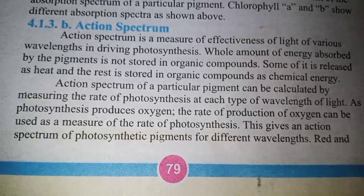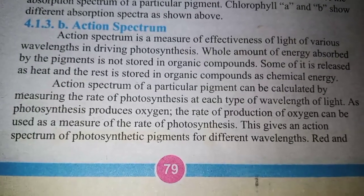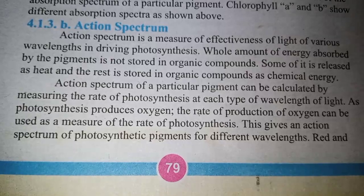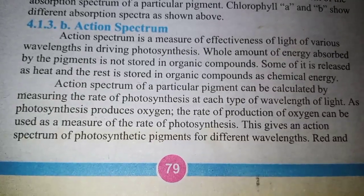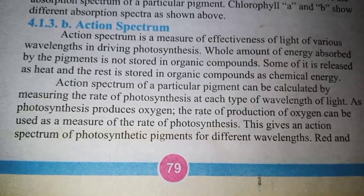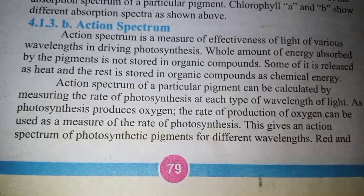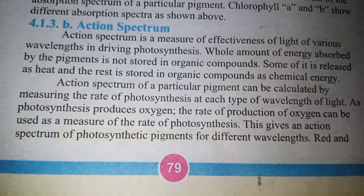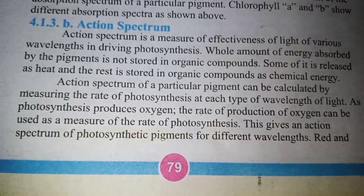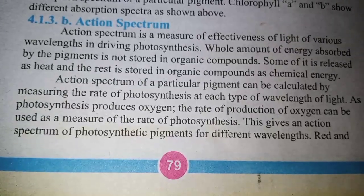The action spectrum of a particular pigment can be calculated by measuring the rate of photosynthesis at each wavelength of light. As photosynthesis produces oxygen, the rate of oxygen production can be used as a measure of the rate of photosynthesis.